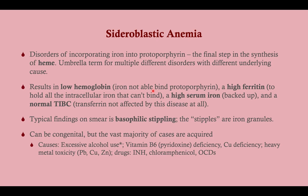Sideroblastic anemia involves disorders of incorporating iron into protoporphyrin in most cases, but in other cases it is due to a deficiency or inhibition of the relevant enzyme — always related to the production of heme. The result is low hemoglobin, high ferritin (because you have an iron backup when not producing heme), high serum iron, and a normal TIBC because transferrin is not affected. The typical finding on smear is basophilic stippling from iron granules. Most cases are acquired.